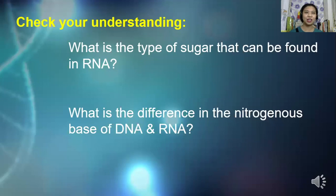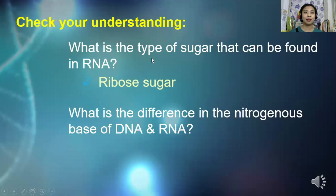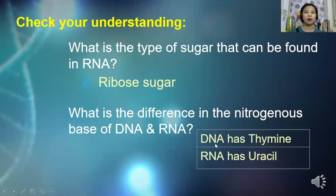Let's check your understanding: what is the type of sugar that can be found in RNA, and what is the difference in the nitrogenous bases of DNA and RNA? The type of sugar found in RNA is ribose. The difference between DNA and RNA when it comes to nitrogenous bases is that DNA has thymine and RNA has uracil.